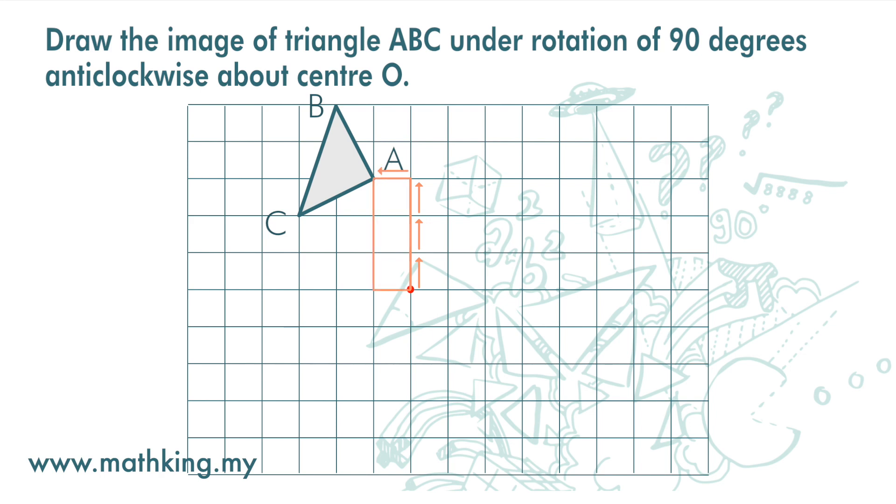We will then rotate the rectangle. Since this line is vertical, it is easy for us to rotate it 90 degrees. And then 1, 2, 3, and 1.